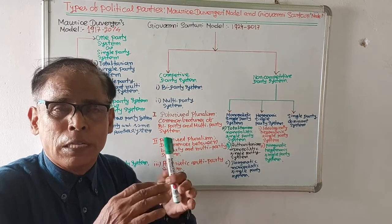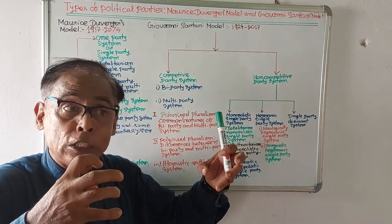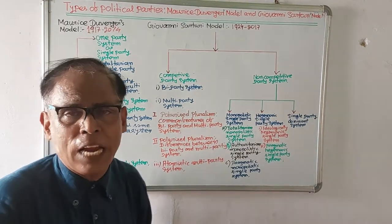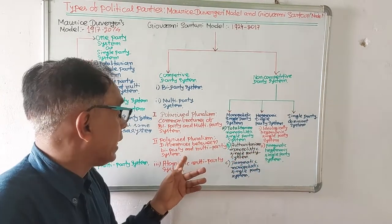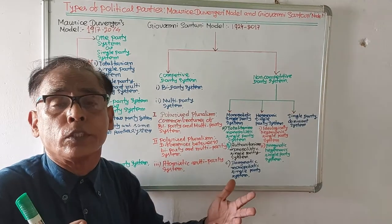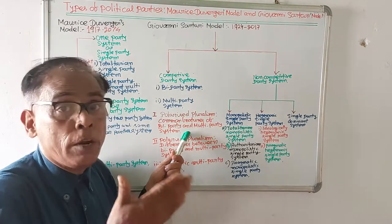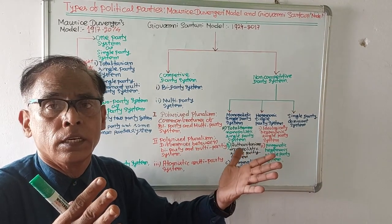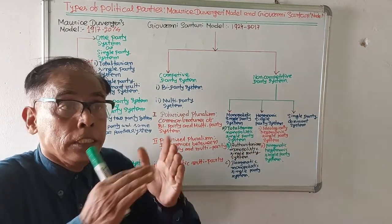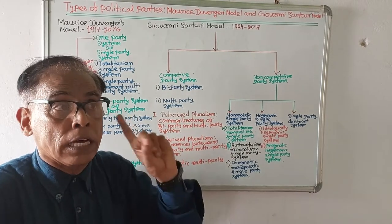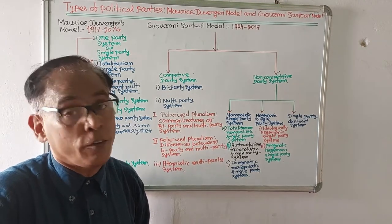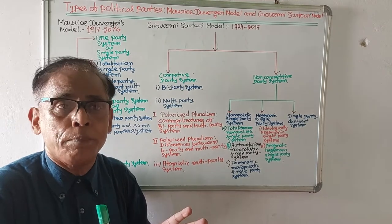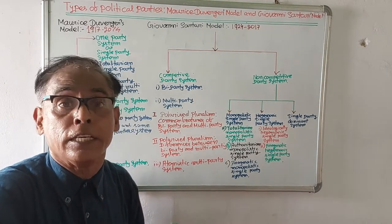He has discussed common features between bi-party and multi-party systems. First, in both systems there are opposition parties. Second, these opposition parties are very important and play an important role. Third, the ruling party will have to face the opposition party. Fourth, each party has its own ideology. Fifth, these parties sometimes give false assurances to people in order to get power.